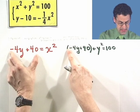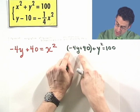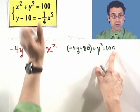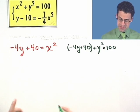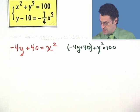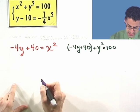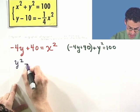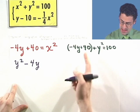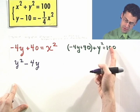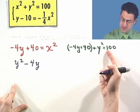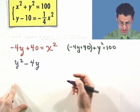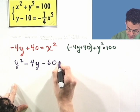Notice that negative 4y plus 40 is the same thing as x squared, so this is really x squared plus y squared equals 100 — exactly the first equation. This is the substitution method. Now I just have y terms. Rearranging into standard form, I get y squared minus 4y plus 40 minus 100 equals zero, which simplifies to y squared minus 4y minus 60 equals zero.